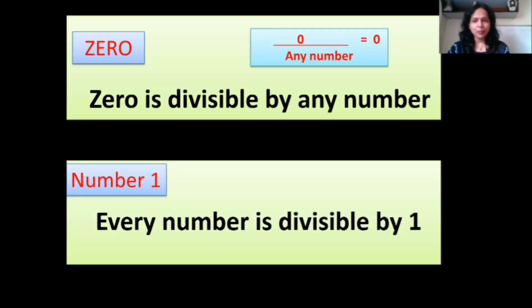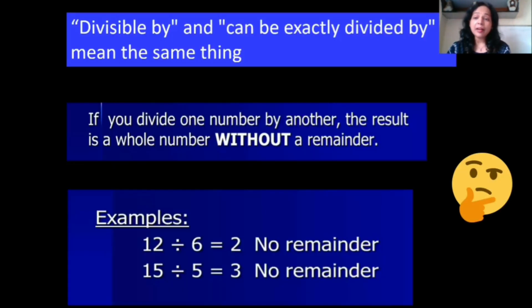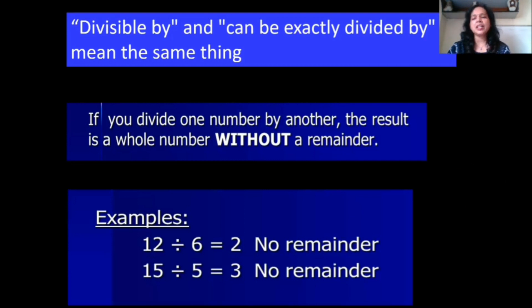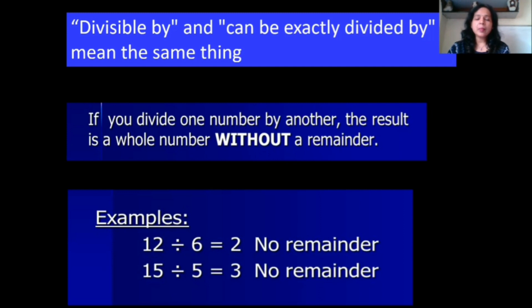First, we will start with 0. Zero is divisible by any number. And number 1 — every number is divisible by 1. Now, what does divisible by mean? Divisible by and can be exactly divided mean the same thing. If you divide any number by another, the result is a whole number without a remainder. For example, 12 divided by 6 — when 12 is divided, there is no remainder, it is completely divisible by 6. Six twos are 12. Fifteen divided by 5 — 5 threes are 15, there is no remainder. So I can say 12 is divisible by 6, and 15 is divisible by 5.